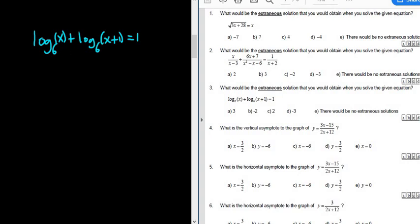First thing you want to do here is combine the logs. Whenever you have a plus, it turns into multiplication. It's called the product rule for logs. So this becomes log base 6, then you multiply. So it's x times (x + 1), and that equals 1. One way to remember it is the addition turns into multiplication.